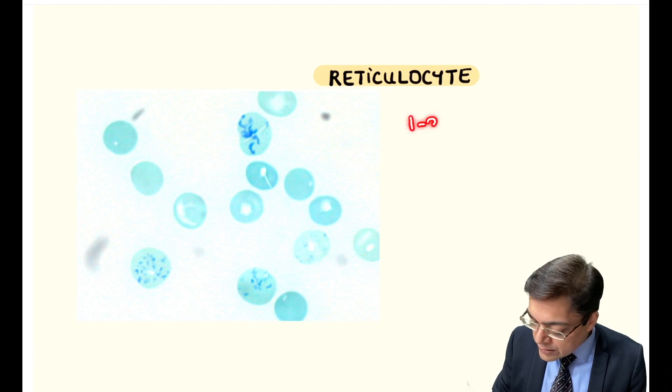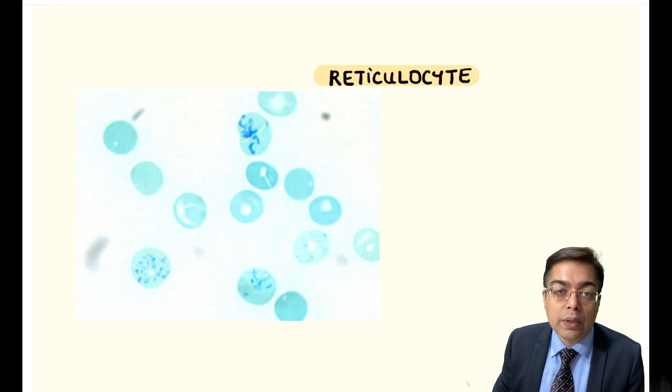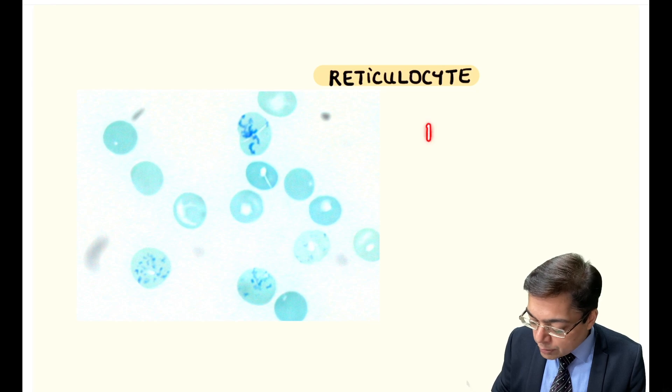If you see the percentage of these cells, they are about 1 to 2% of the number of RBCs that we have. These cells are going to get converted into mature RBCs and the average time required for their maturation is 1 day.